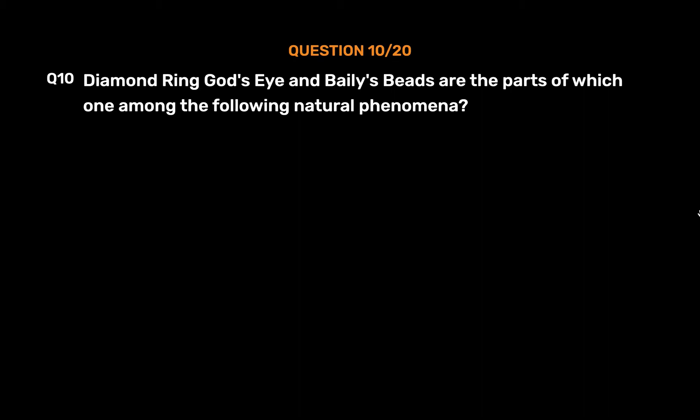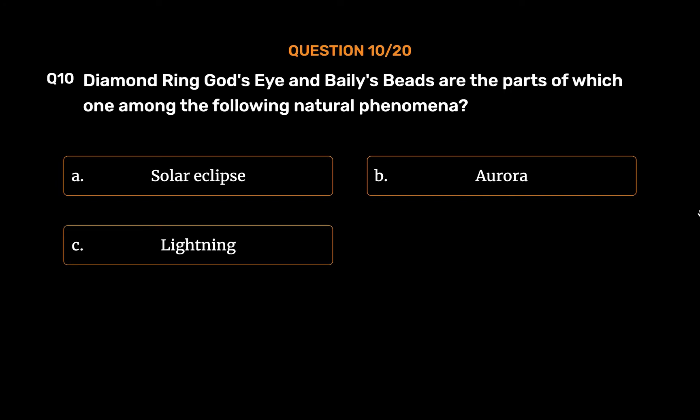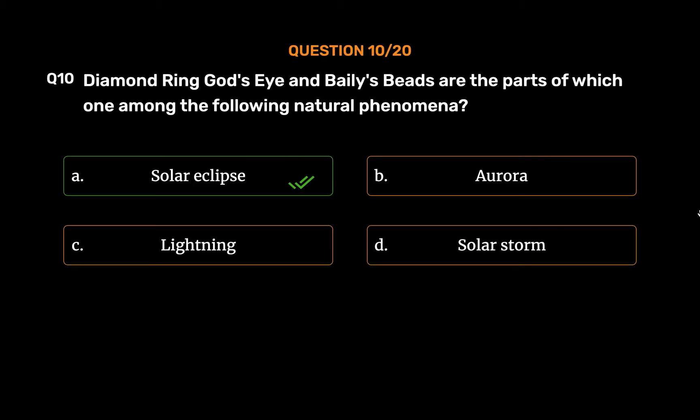Question No. 10: Diamond Ring, God's Eye and Bailey's Beads are parts of which one among the following natural phenomena? Option A, Solar Eclipse; Option B, Aurora; Option C, Lightning; Option D, Solar Storm. The correct answer is Option A, Solar Eclipse.